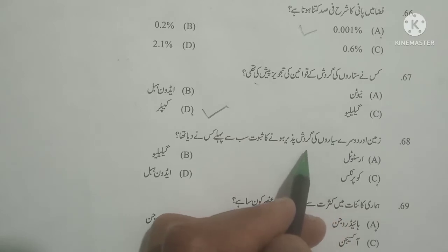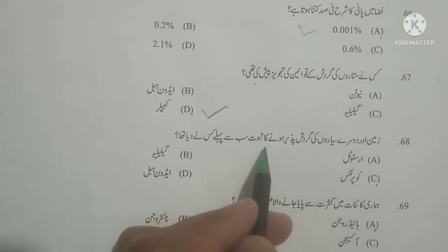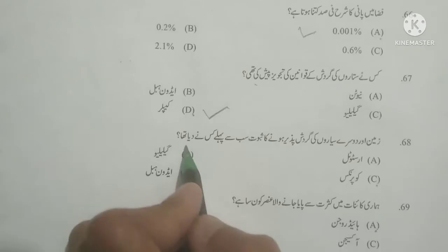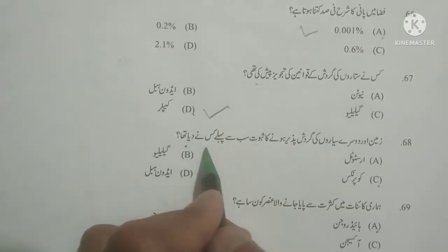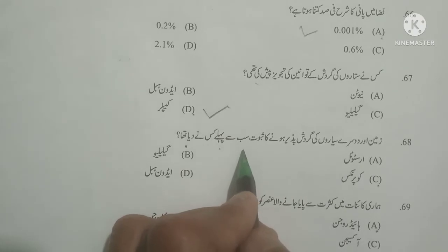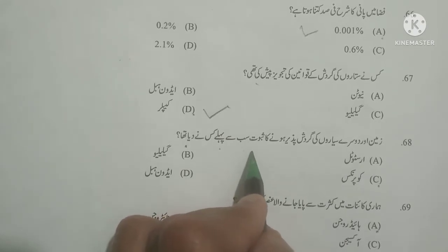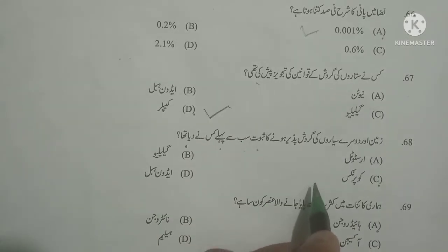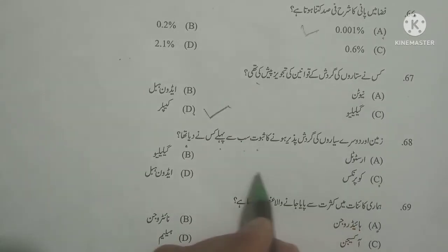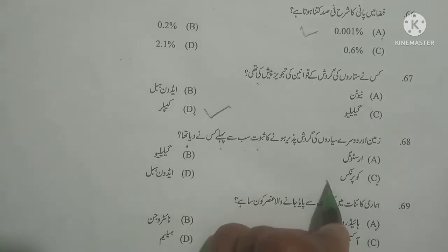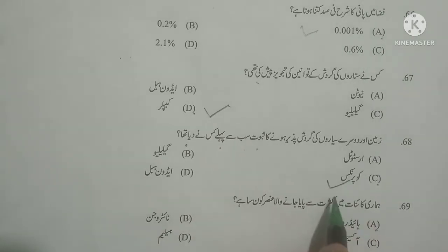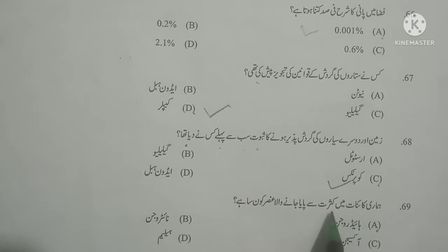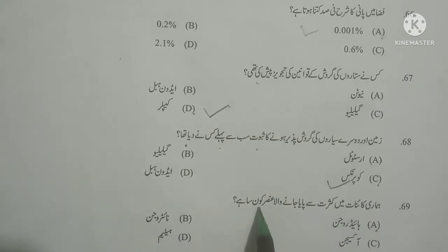Next question: Zameen aur doosre sayyaro ki gardish pazeer hone ka saboot sabse pehle kisne diya tha? Who was the first scientist to prove that the earth and other planets are rotating? As you know, Copernicus proved that the earth and other planets are rotating. Options given are Aristotle, Galileo, Copernicus — Copernicus is correct.